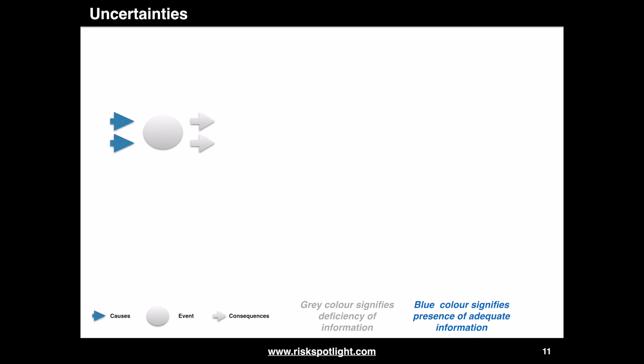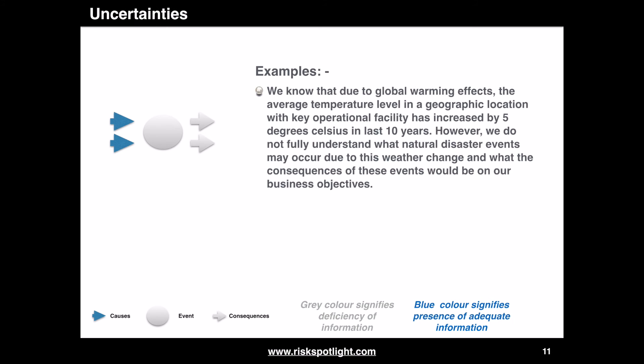The next variation covers the situation where we do not have adequate information about causes, events, or consequences. For example, we know that due to global warming effects the average temperature in a geographic location with a key operational facility has increased by 5 degrees Celsius in the last 10 years. However, we do not fully understand what natural disaster events may occur due to this weather change or what the consequences of these events would be on our business objectives.